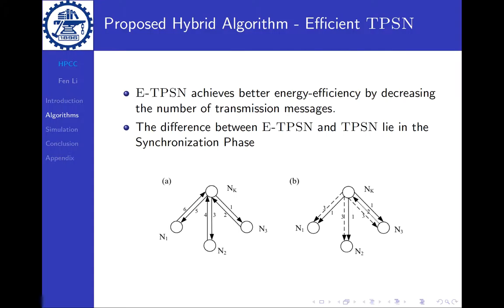As you can see in the picture, the E-TPSN chooses a node close to the parent node. The node is NK and the close child node is N3. We choose N3, which will reply to the synchronization request message instead of requiring all the child nodes to do the two-way handshake separately.